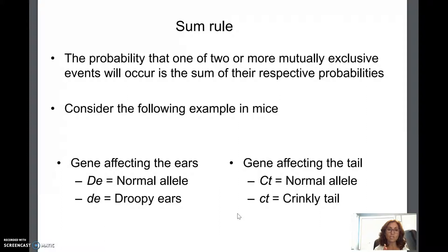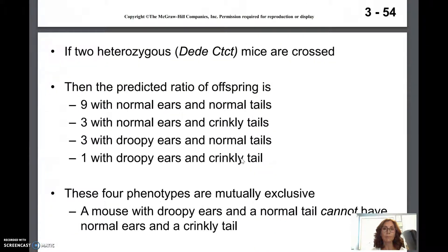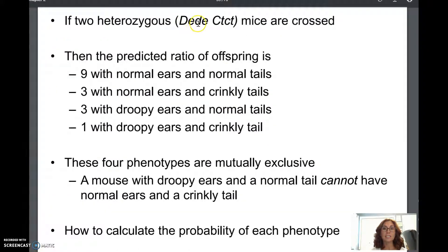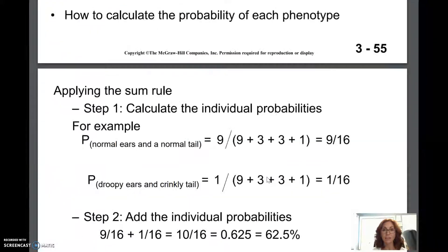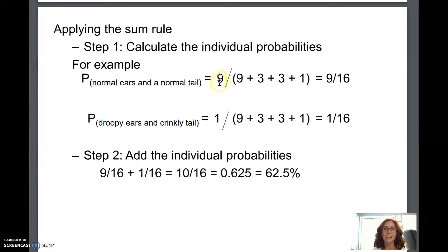For example, if you have a gene affecting ears — a normal allele for upright ears or droopy ears — and a gene affecting the tail — straight tail or crinkly tail — that's a dihybrid cross. That would be written like big D little e crossed with little d little e, dealing with ear shape and tail shape. The predicted ratio is 9:3:3:1, and these four phenotypes are mutually exclusive.